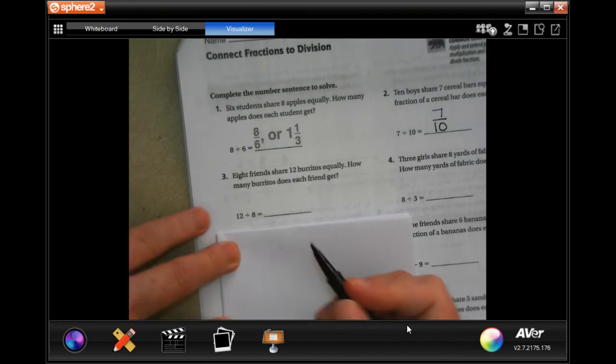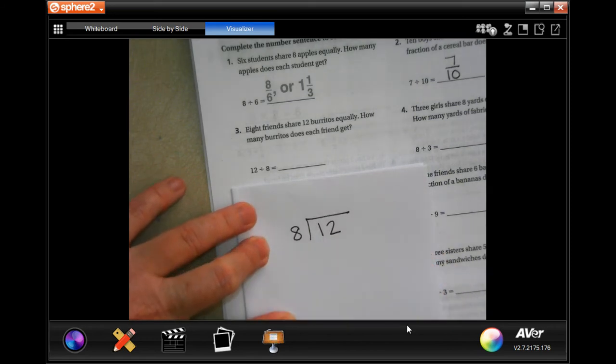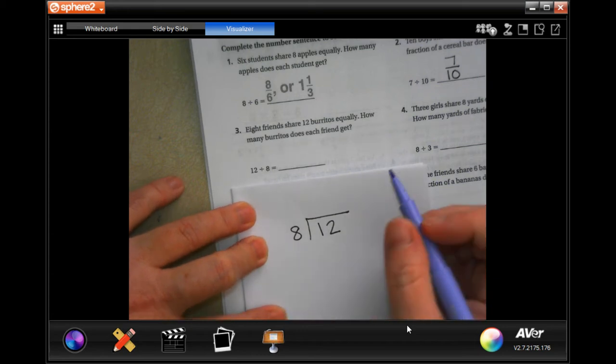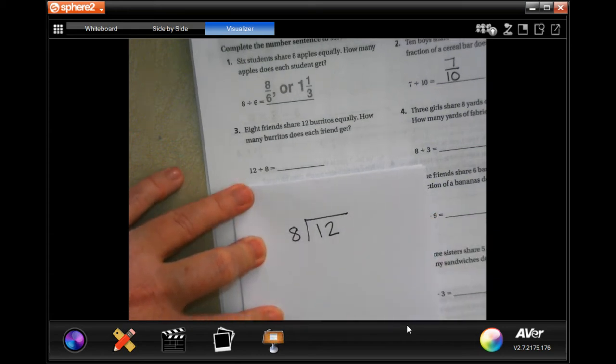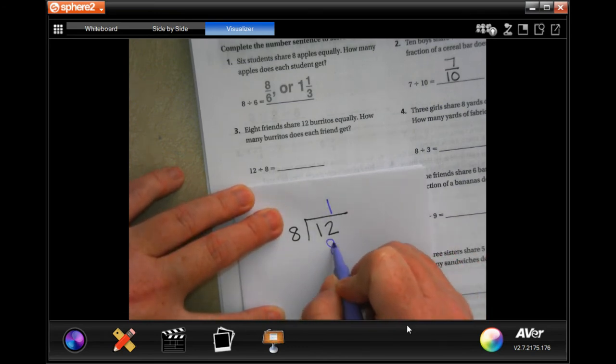It gives us twelve divided by eight. I'm going to put that like this so you guys can see how it is. I'm getting my answer and then we're going to do it mentally. So eight is going to go into twelve one time. One times eight is eight, subtract and get four.